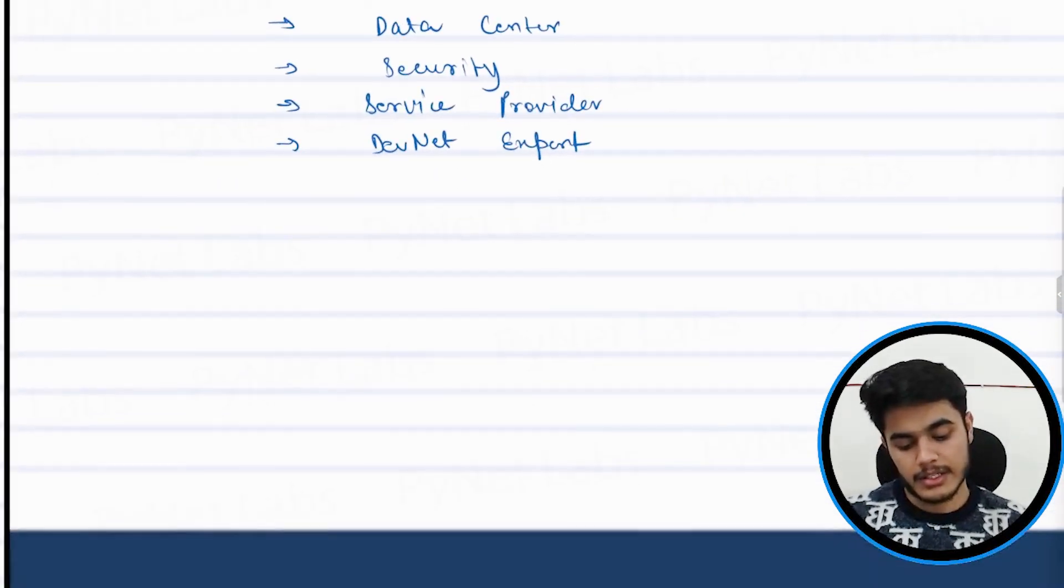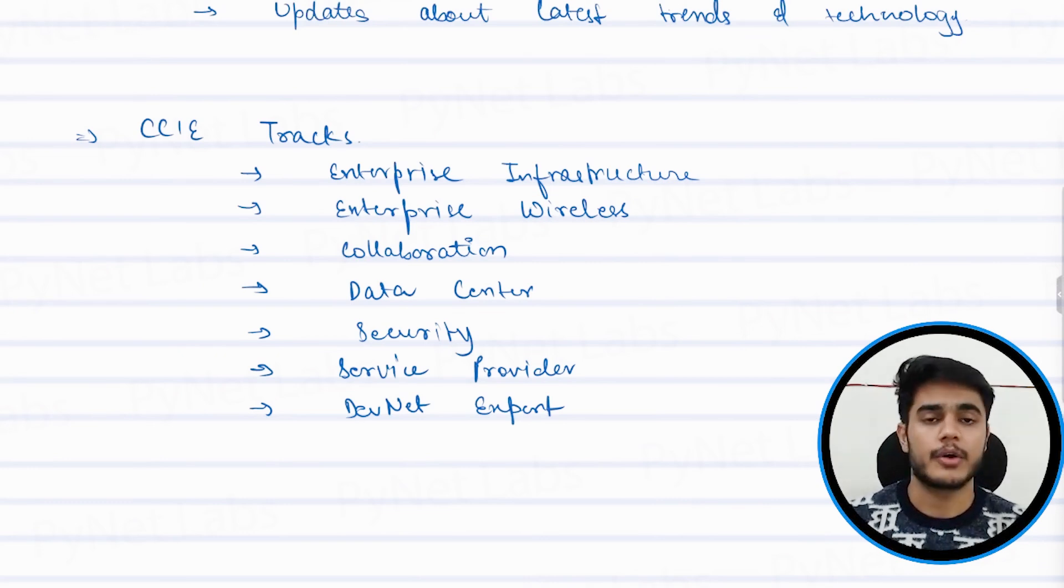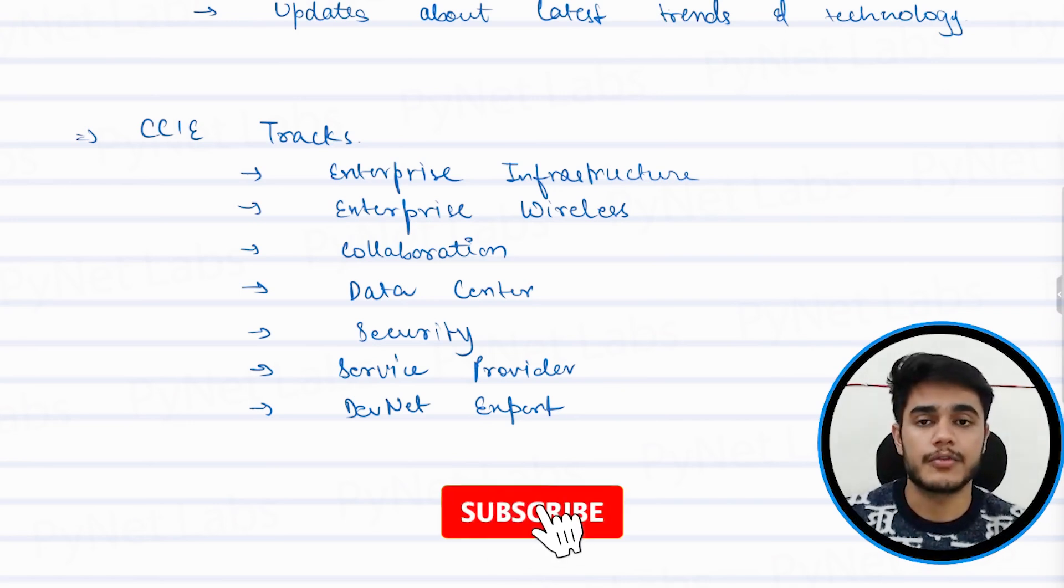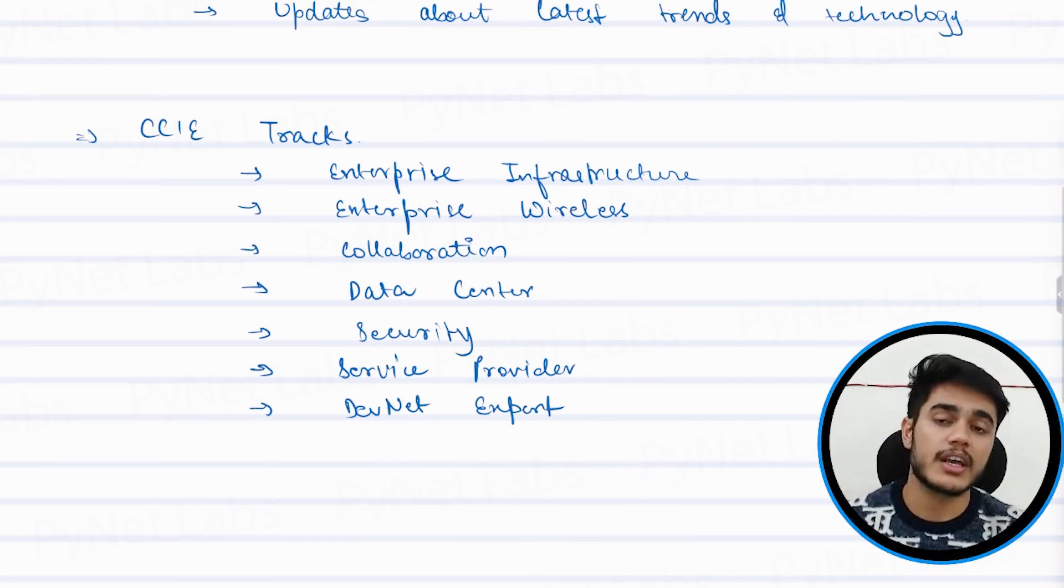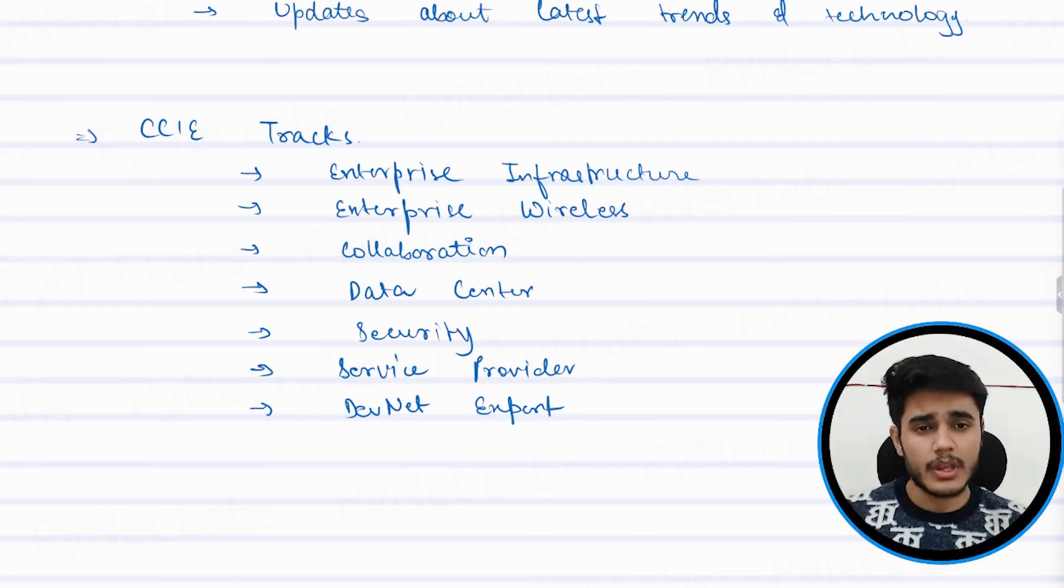The very first thing is that you should meet the prerequisites. For example, there are prerequisites like clearing the CCNP certification or getting a core exam like ENCOR to get eligible for your lab attempt. After that, you should have a study plan for your lab exam. Prepare for the lab exam and pass the practical exam and that's it.